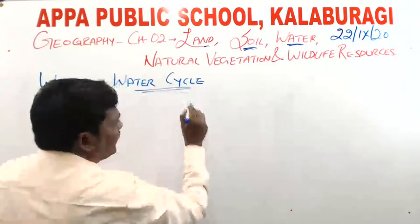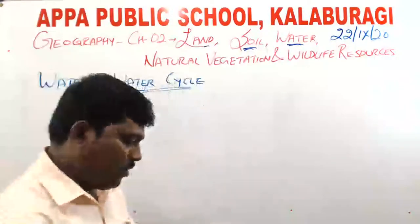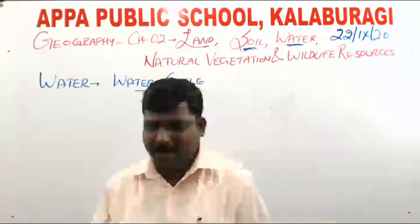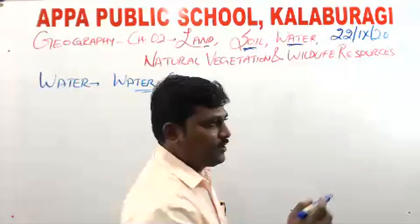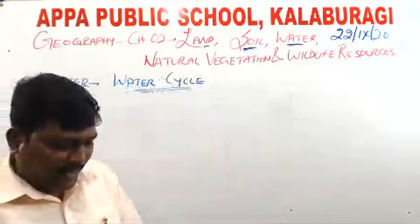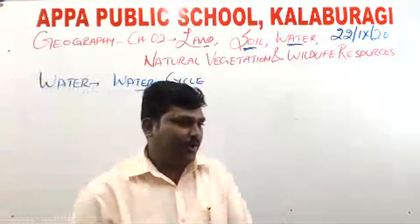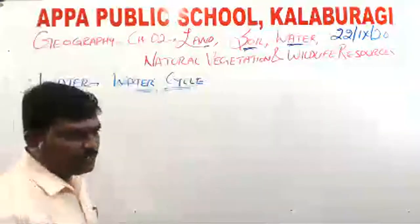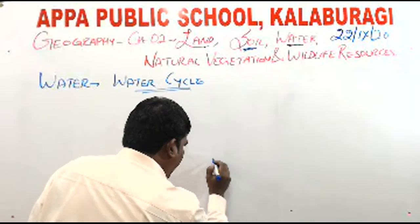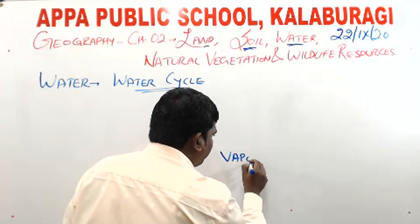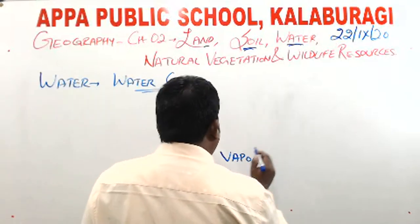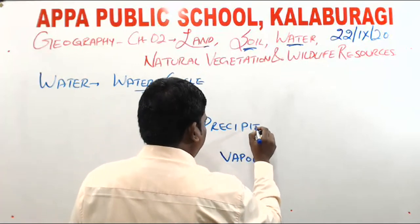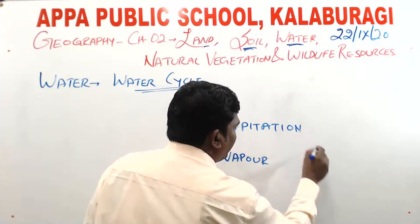The water cycle, or hydrological cycle, you have learnt in your previous class. Water neither can be added nor subtracted in the process of the water cycle. Water travels in the form of vapour. There are a few processes — one is precipitation, which you may have studied about.